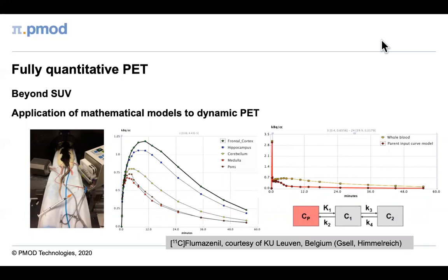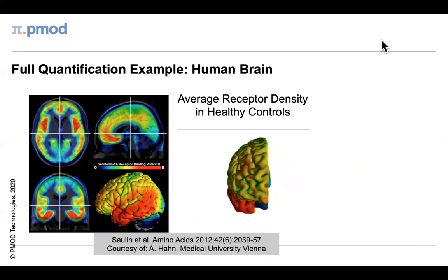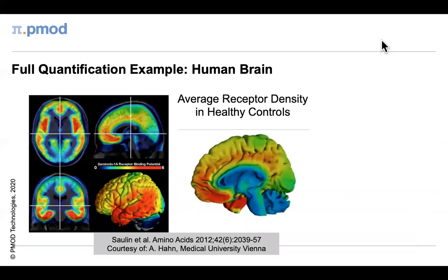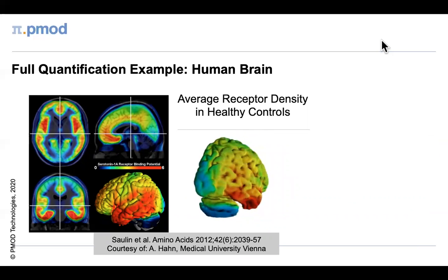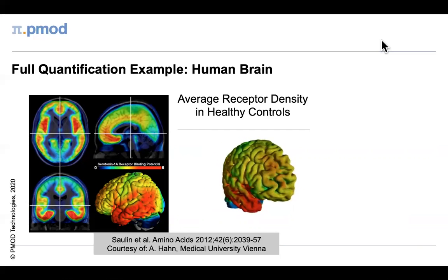Kinetic modeling allows us to go beyond SUV. The tools in PMOD allow you to extract time activity curves from the PET data, as shown in the center of the slide. When combined with the arterial blood concentration, we can use models such as the two tissue compartment model to extract information about tracer transport and receptor binding. Applying kinetic modeling in every voxel of a PET image is known as parametric mapping — shown here is an example from the Medical University of Vienna, showing 3D maps of serotonin 1A receptor binding created in PMOD's parametric mapping tool, PXMOD.